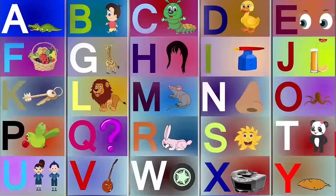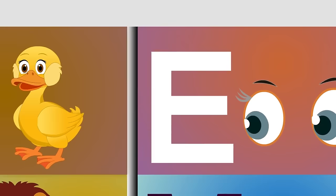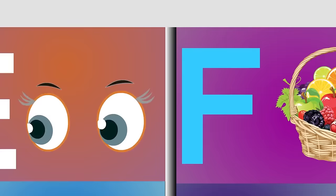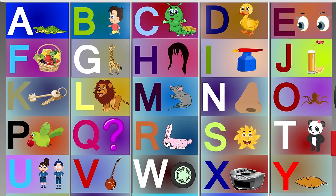A for alligator, a-a-alligator. B for boy, b-b-boy. C for caterpillar, c-c-caterpillar. D for den, d-d-den. E for eye, e-e-i. F for fruits, f-f-fruits. G for giraffe, ch-ch-giraffe. H for hair, h-h-hair.